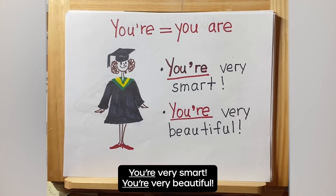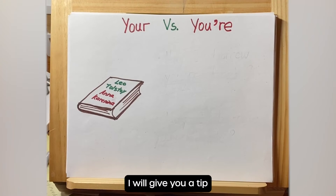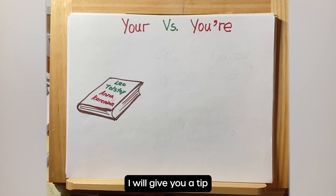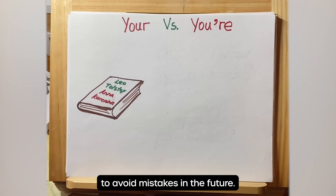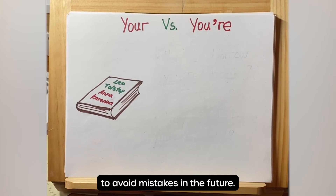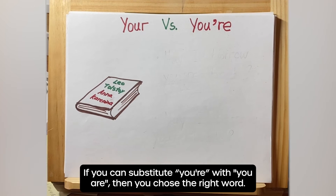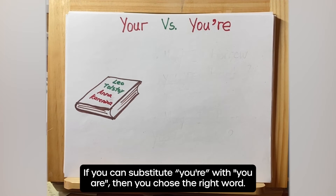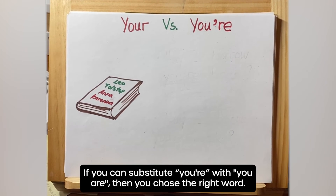'You are very beautiful.' Here is a tip to avoid mistakes in the future: if you can substitute 'you're' with 'you are' and it still makes sense, then you chose the right word.